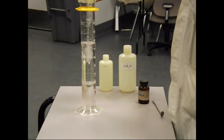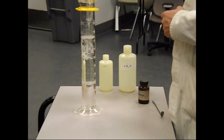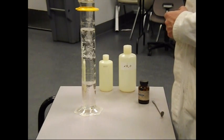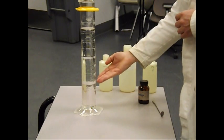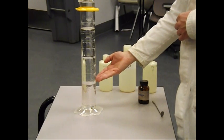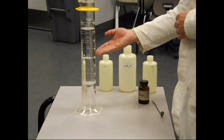Now hexane, which is totally non-polar, is also not miscible in water. So you have a layer here between the dichloromethane and the water and a layer up here between the water and hexane.